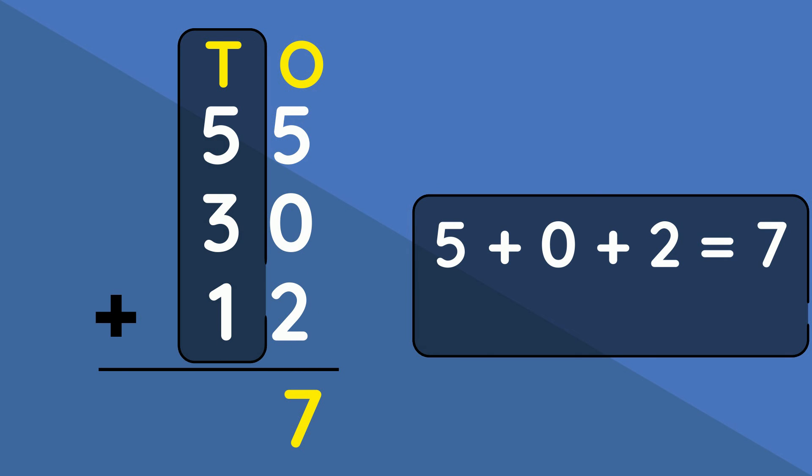And then in our tens column, we have five added to three added to one gives us nine. So our answer would be $97 in total.